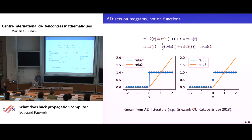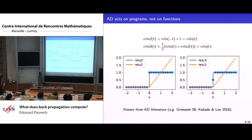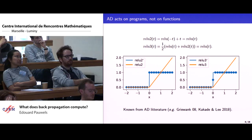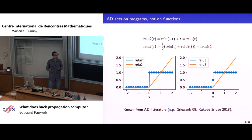Let's look at a few examples taken from TensorFlow. The orange part is the function and the blue part is obtained by applying automatic differentiation to the orange part. At non-smooth points, TensorFlow chooses some value for the derivative. I can give you two equivalent implementations of the relu function — equivalent in the sense that they compute the same thing mathematically, but from a programming point of view they are different. As a result, if I apply automatic differentiation, the value of the derivative at zero is different.